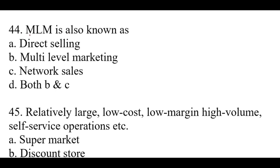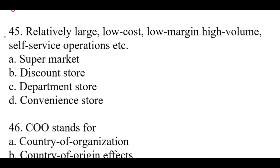Question number forty-four: MLM is also known as — right option is D, both B and C: multi-level marketing and network sales. Question number forty-five: Relatively large, low cost, low margin, high volume, self-service operations — right option is A: Supermarket.